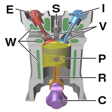Split cycle engines separate the four strokes of intake, compression, combustion and exhaust into two separate but paired cylinders. The first cylinder is used for intake and compression. The compressed air is then transferred through a crossover passage from the compression cylinder into the second cylinder, where combustion and exhaust occur. A split cycle engine is really an air compressor on one side with a combustion chamber on the other.